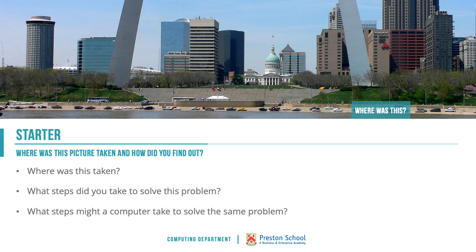For the starter activity, hopefully you found out a little bit of information around that arch. Without knowing it, in doing that you've already used some computational skills. I'm guessing nobody typed into Google 'where is the arch with the yellow car in front of it and the dome-shaped building behind it.' I'm guessing we typed in 'large metal arch' and narrowed down from there. In doing that you've already used a range of different computational thinking skills.